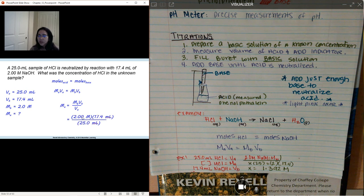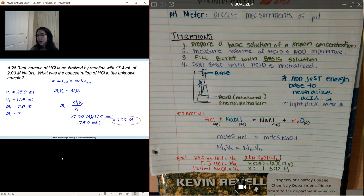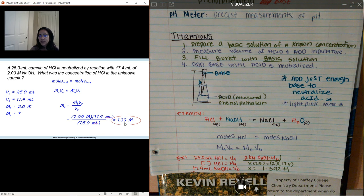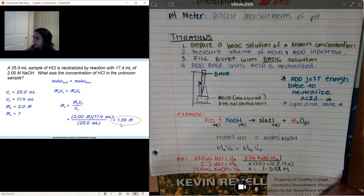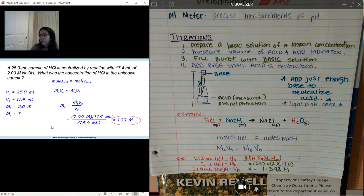So 2 times our concentration times the volume divided by the volume gives us 1.39 molarity. Now let's double-check our significant figures: 3 significant, 3 significant, 3 significant — and we need 3. My answer had 4, so I'm going to get rid of that last digit. Now we have 3 significant digits.